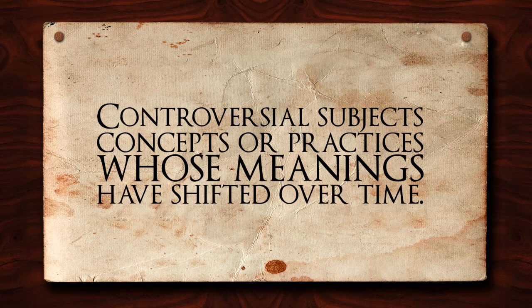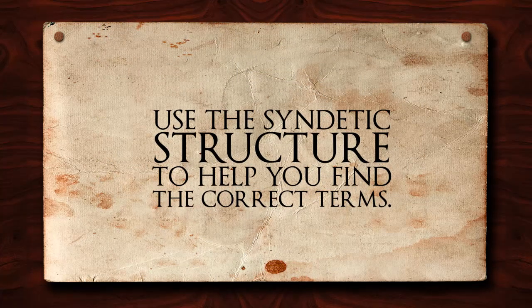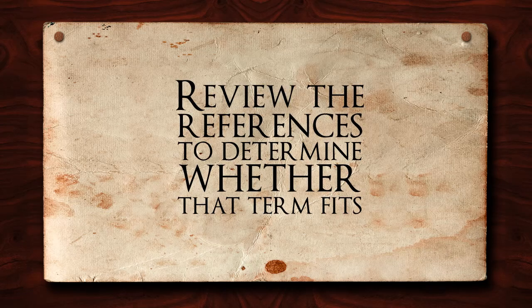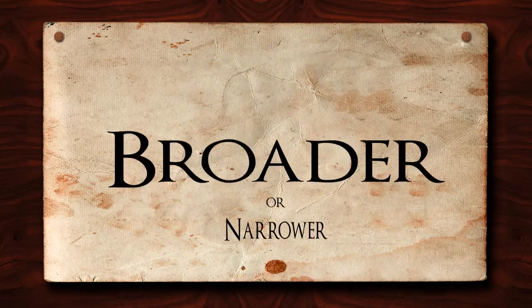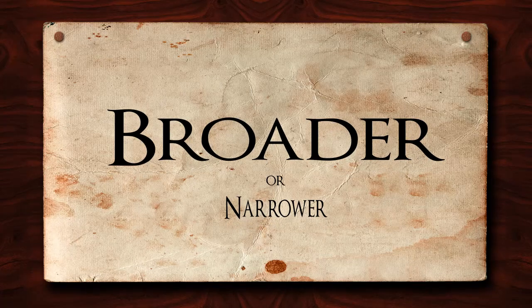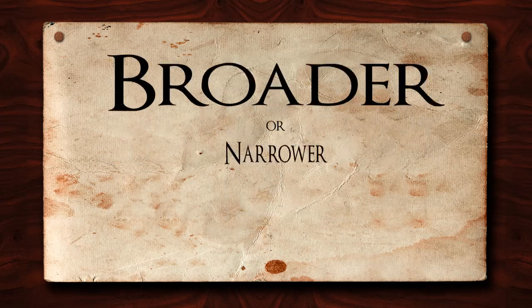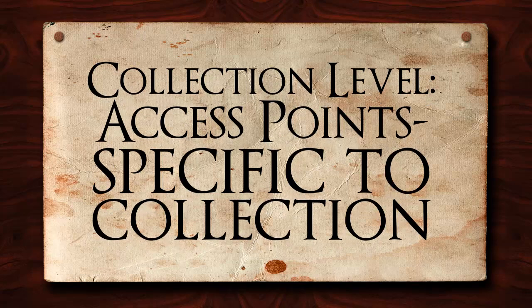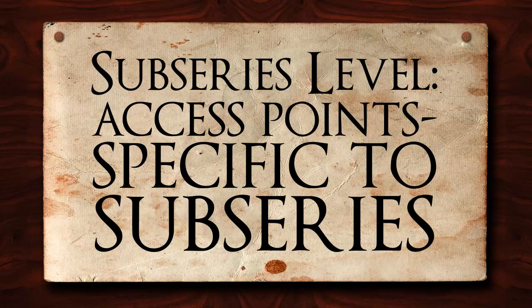As you are selecting terms, you should use the syndetic structure of the controlled vocabulary to help you find the correct terms. While you may start your search at one term, you should review the references to determine whether that term fits, or if there is a broader or narrower term that might be more appropriate. At all levels of your description, it is important that the terms used be specific to that level: at the collection level, access points should be specific to the collection, and at the sub-series level, access points should be specific to the sub-series.